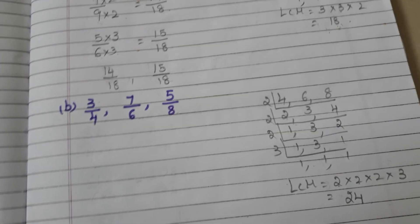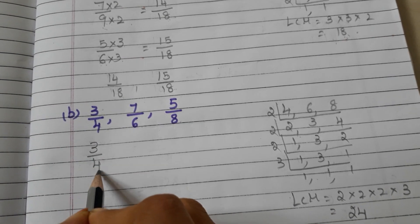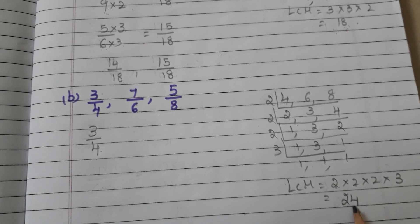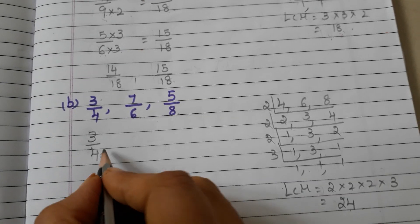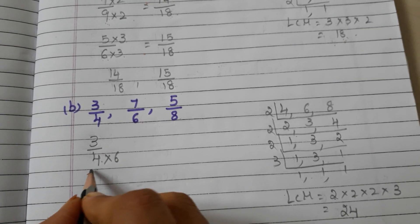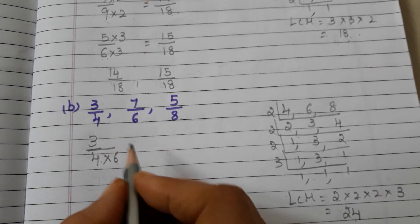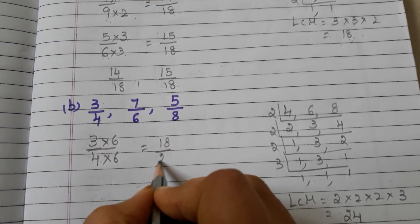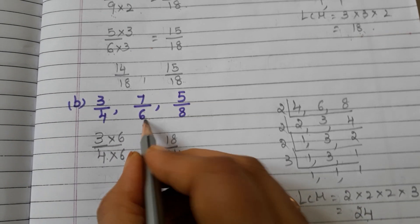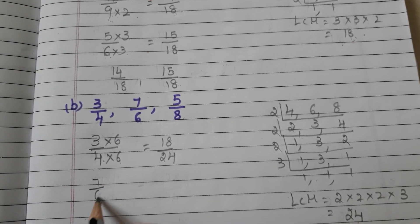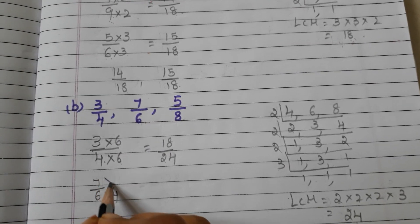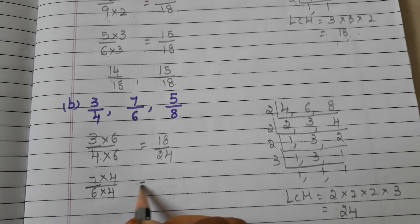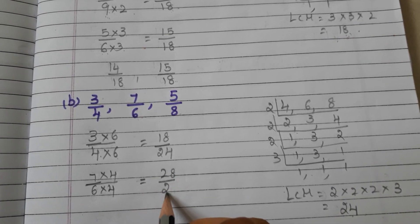Now take the fraction 3 by 4. We have to multiply the numerator and denominator with the same number so that the denominator becomes 24. 4 sixes are 24, so we multiply the numerator and denominator with 6: 3 sixes are 18 and 4 sixes are 24. Now take the fraction 7 by 6: 6 fours are 24, so we multiply the numerator and denominator with 4: 7 fours are 28 and 6 fours are 24.